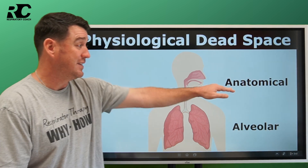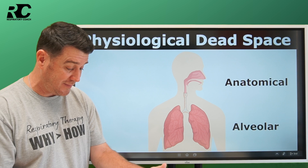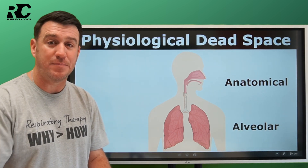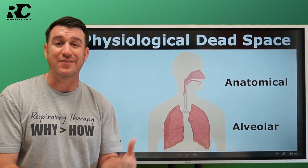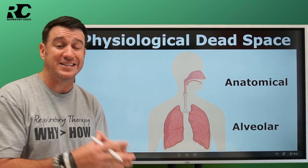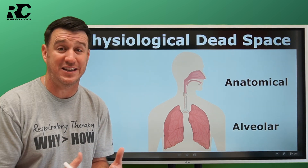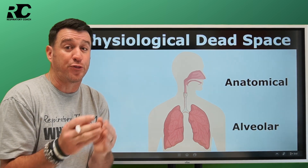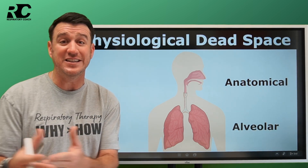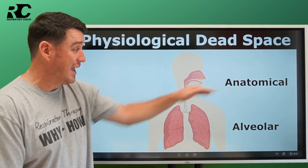The key point about anatomical dead space is that everybody has it all the time, and it can actually be estimated. Anatomical dead space is approximately 1 milliliter per pound of ideal body weight. So if your ideal body weight is 170 pounds, then about 170 mL of every tidal volume will not participate in gas exchange. For example, a tidal volume of 470 mL means only about 300 mL reaches the alveoli — this is the VD/VT (dead space to tidal volume) ratio.